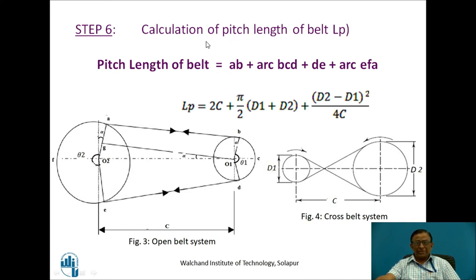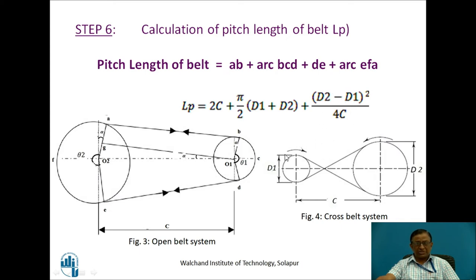Next, I calculate the pitch length of the belt required. There are two systems: open belt and cross belt. For the open system, based on the geometrical relationship, the pitch length LP equals 2C + (π/2)(D1 + D2) + (D2 − D1)² / 4C. For the cross belt system, the difference is that the bracket becomes (D2 + D1)² / 4C. This is how I calculate the required pitch length LP of the belt.